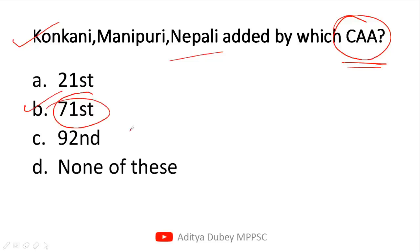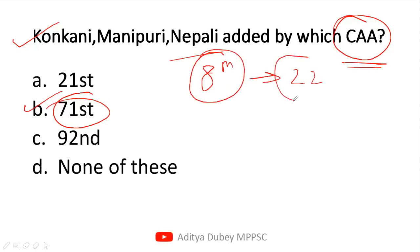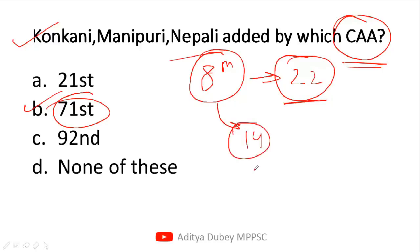Regarding this, I want to tell you some important facts. Our constitution's 8th Schedule deals with languages. The total languages in it are 22 official languages. If we talk about the original 8th Schedule, originally in the Indian constitution there were 14 languages. The remaining languages were added through constitutional amendment acts.